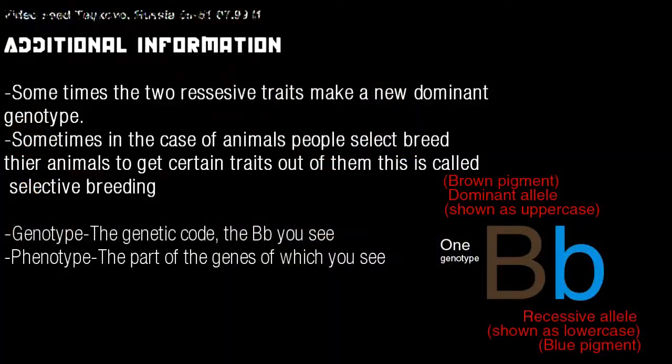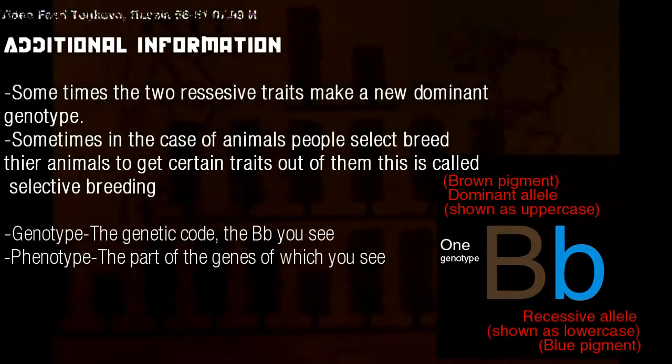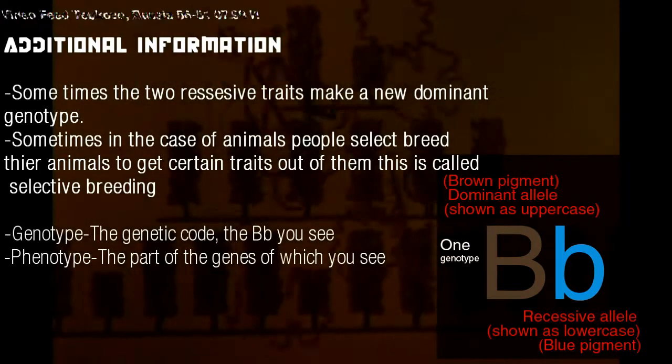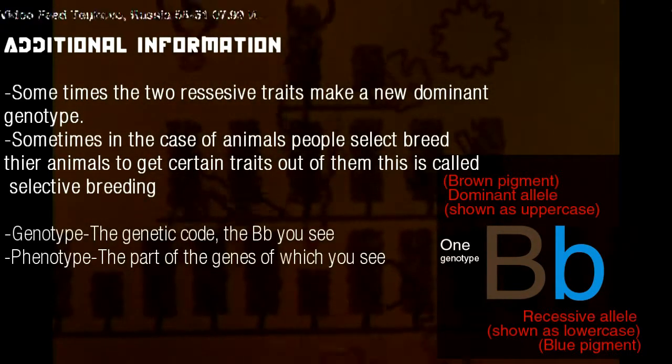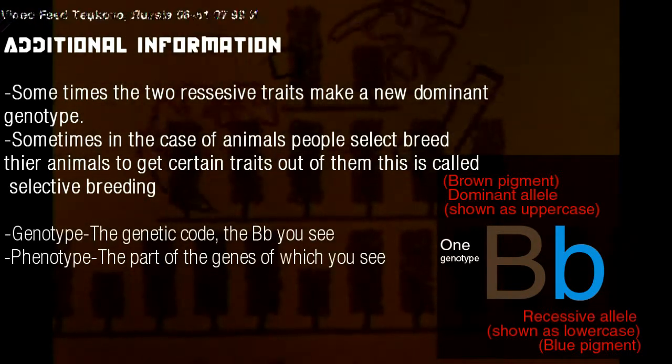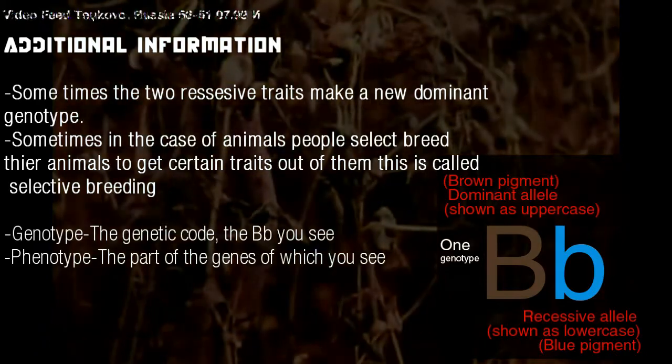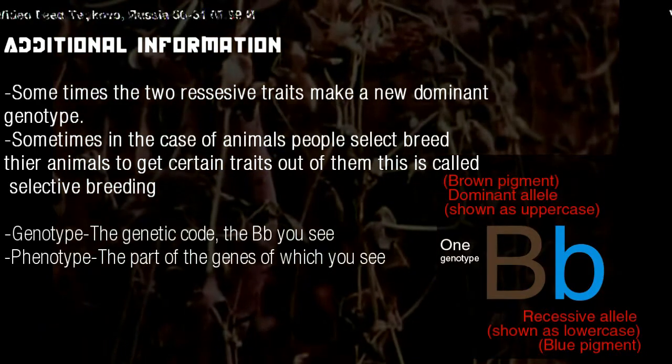Sometimes two recessive traits make a new dominant genotype. And also, in the case of animals, people selectively breed their animals to get certain traits out of them. This is called selective breeding.